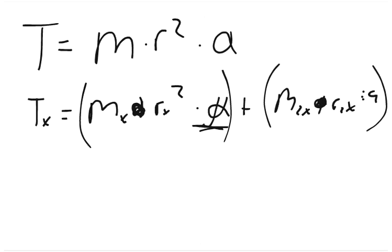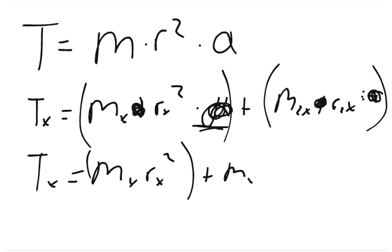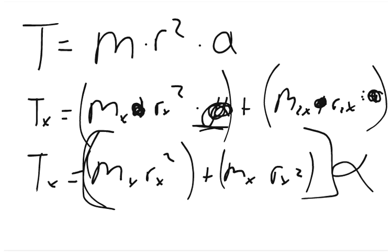So we have mx rx squared plus mx rx squared, all these individuals, times you take the whole thing, times the angular acceleration. Another interesting and simplifying portion of this is that all of the radiuses about the x-axis are the same.